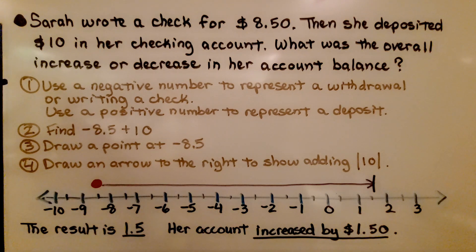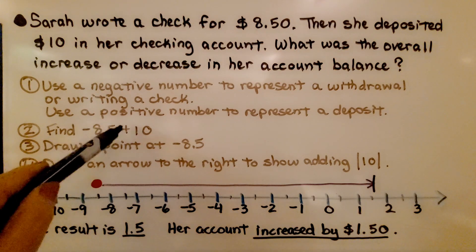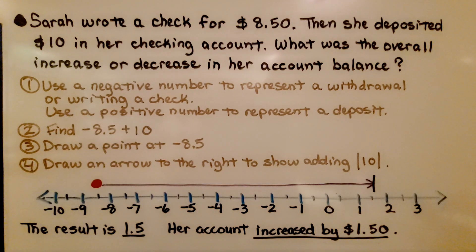First thing we do is, we use a negative number to represent a withdrawal or writing a check. We use a positive number to represent a deposit. We need to find negative 8.5 plus 10.